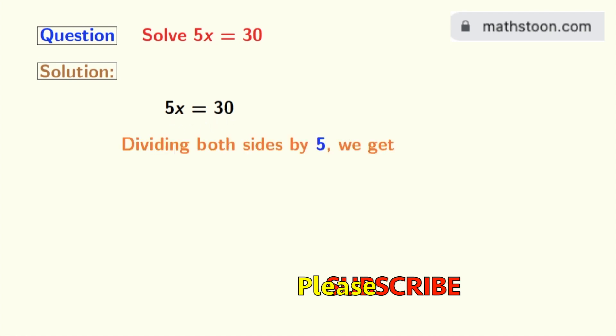Doing so, we get 5x divided by 5 equals 30 divided by 5.